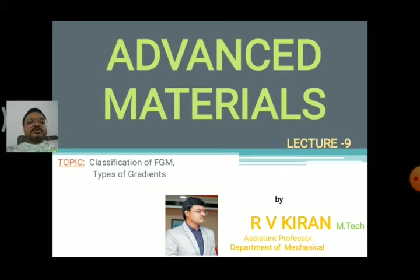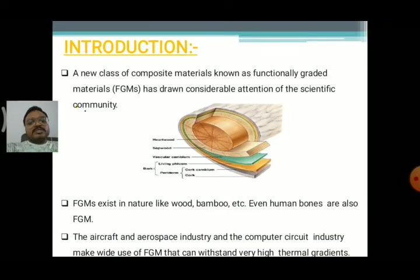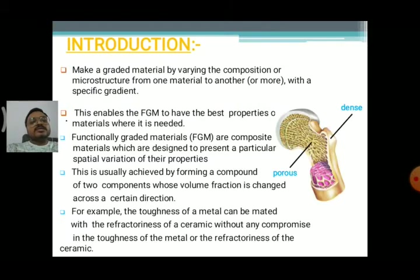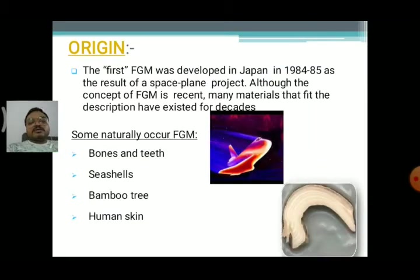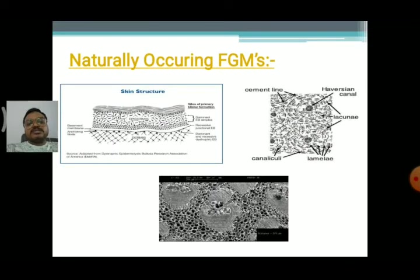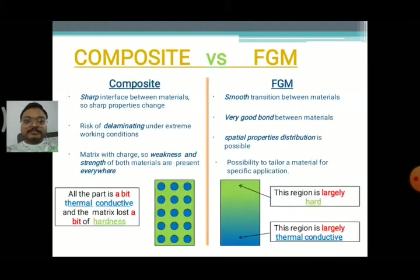In the last lecture we have already seen the introduction of FGMs — why we are seeing FGMs instead of composites, what is the new class in the materials, what are the recent advanced materials in the composites and alloys, and where it came from. That is the origin of FGMs — it came from Japan, developed in 1984-85 as a result of the space plane project. We have also seen some naturally occurring FGMs, such as skin structure and bamboo sticks and other trees.